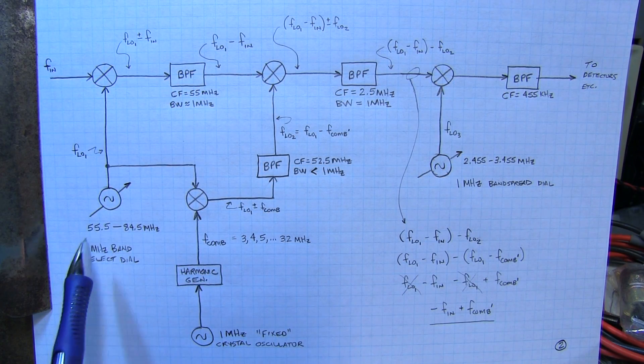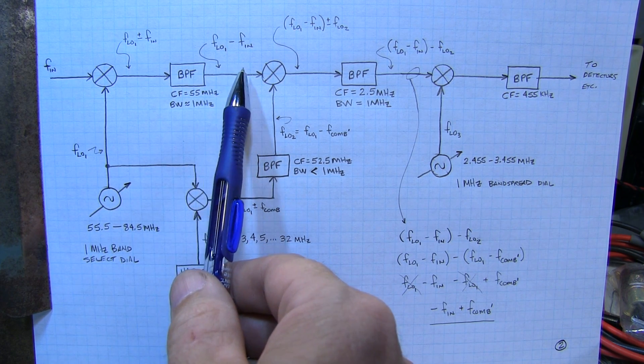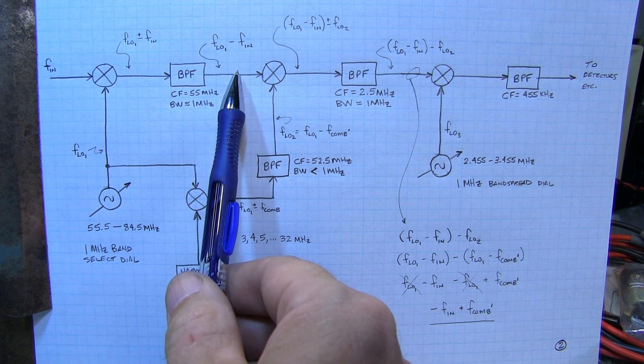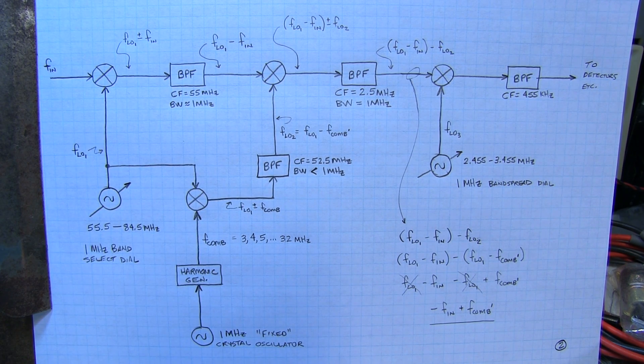Now of course any drift that is in this first VFO is also going to result in frequency drift coming here at the first IF. So how do we cancel it? This is kind of where the magic of the Wadley drift canceling loop comes in.